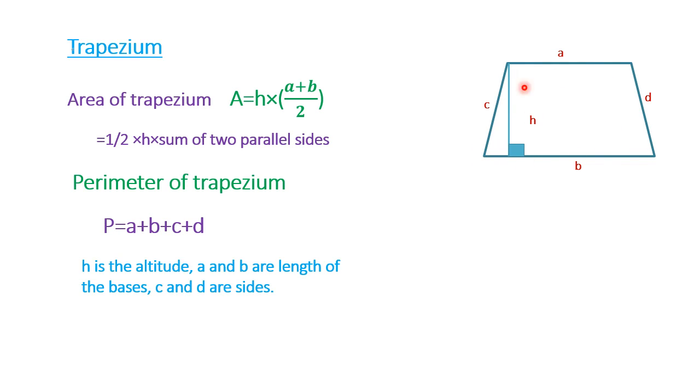H is the altitude. A and B are the lengths of the bases. C and D are the sides.